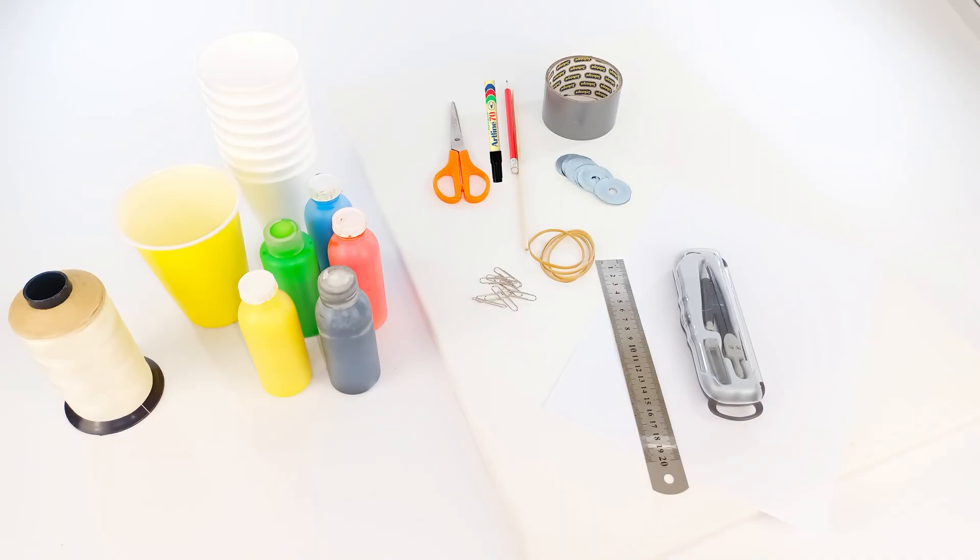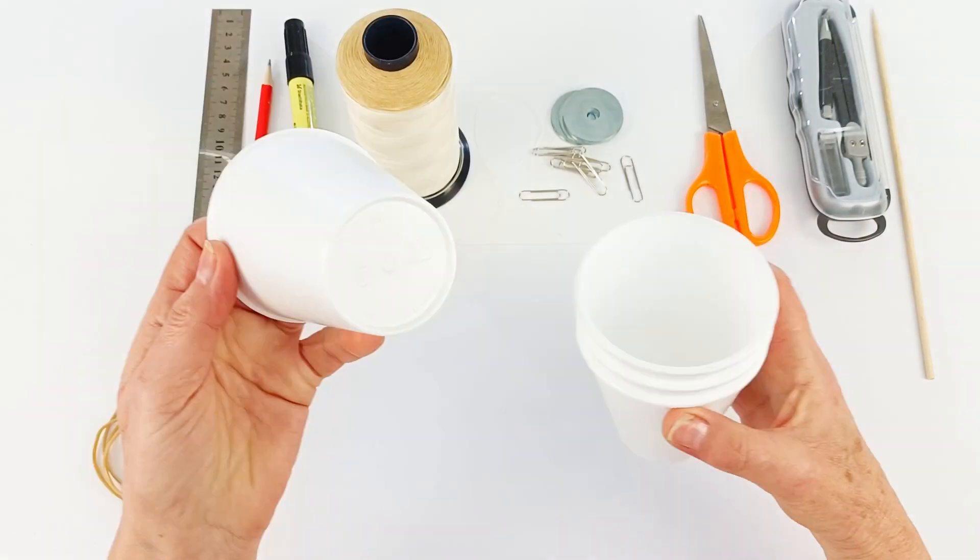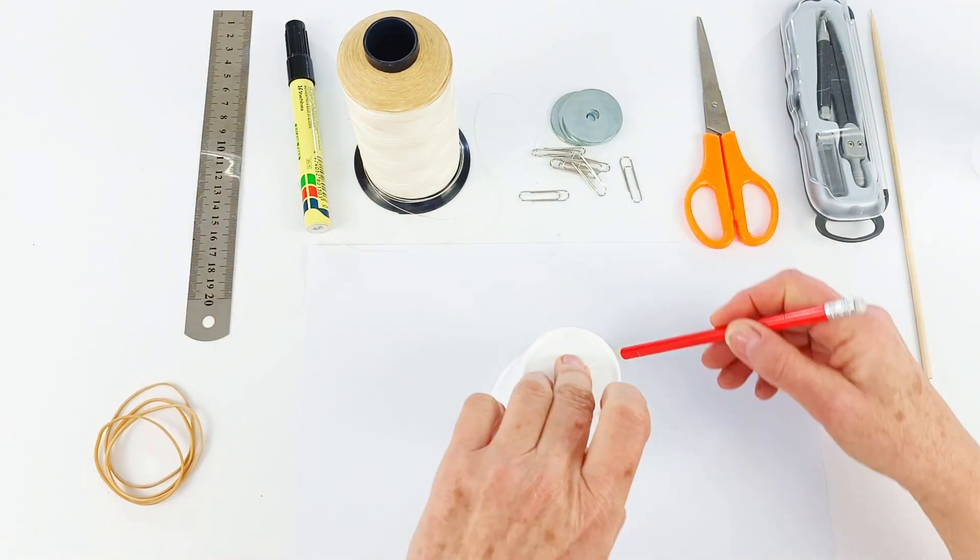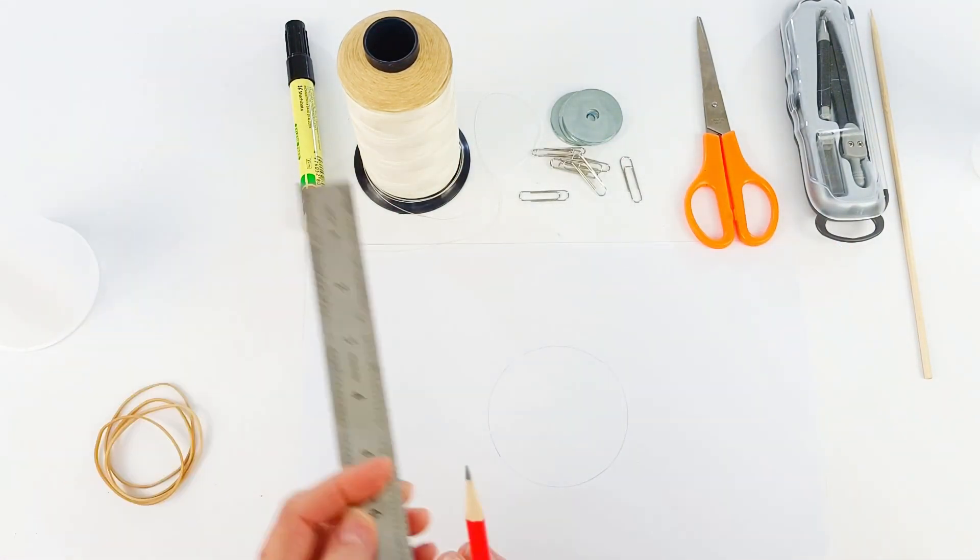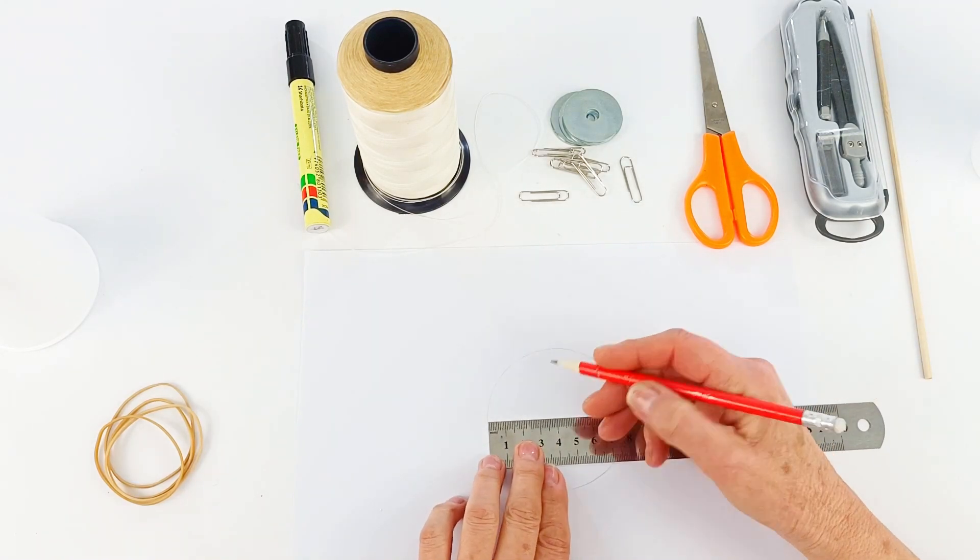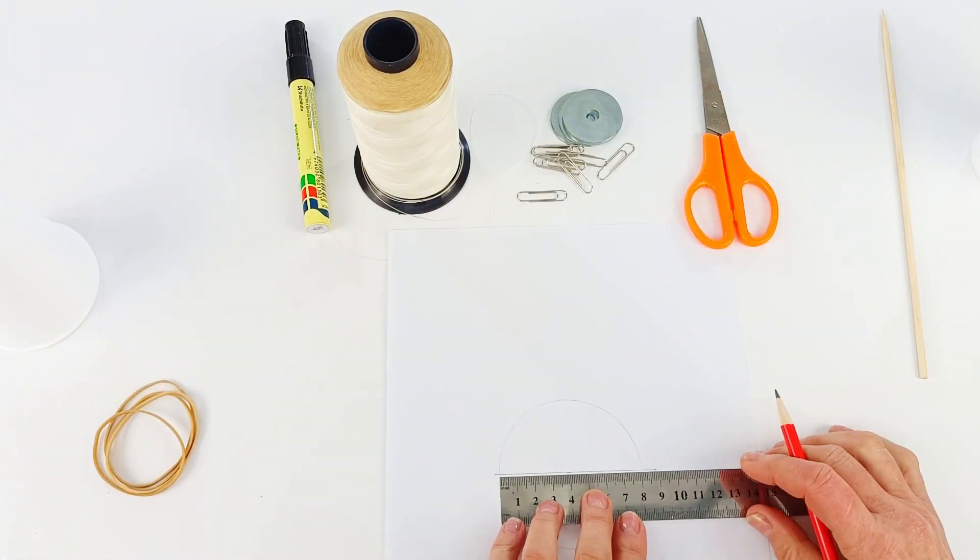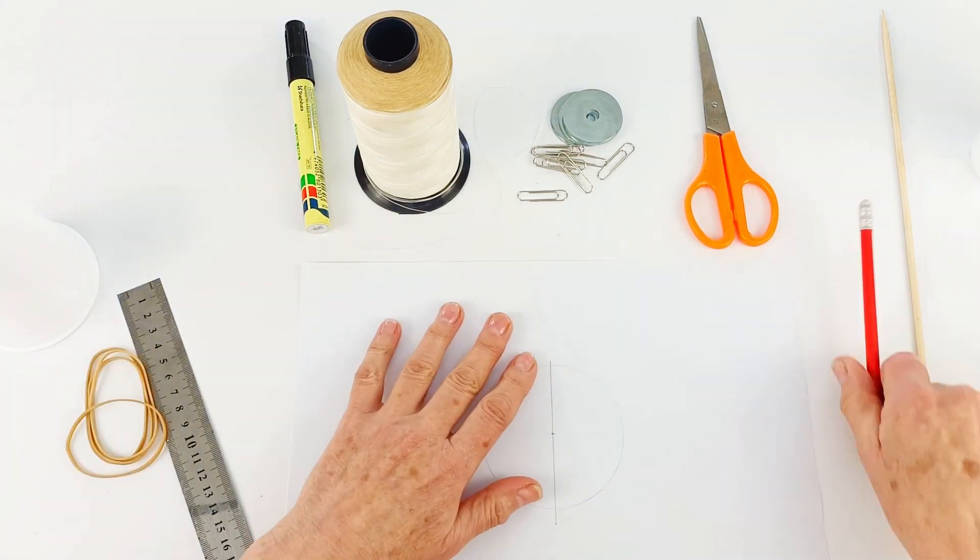We're going to gather up some very simple supplies. This is really easy to do. You're going to want to grab your cup and we're going to trace out the cup on the paper so we get the circle and then we're going to measure to find the distance. Put a line right through it and then make sure you mark that center point.